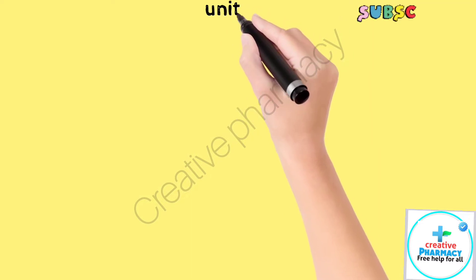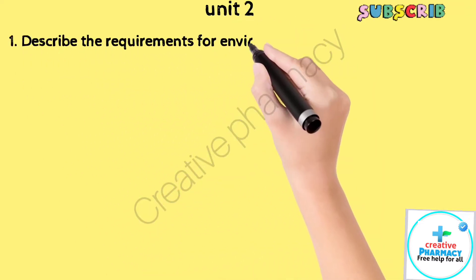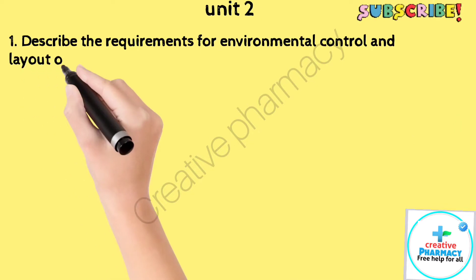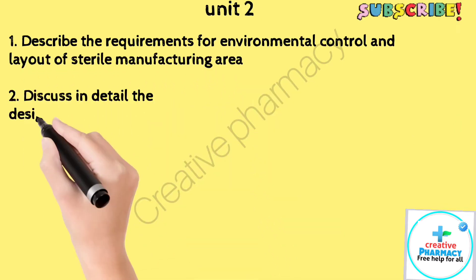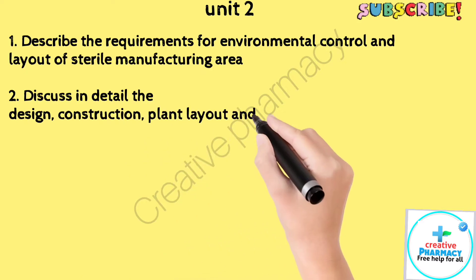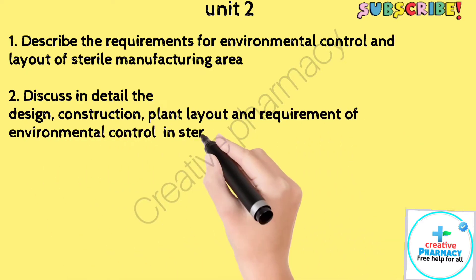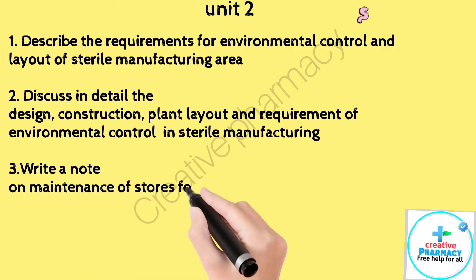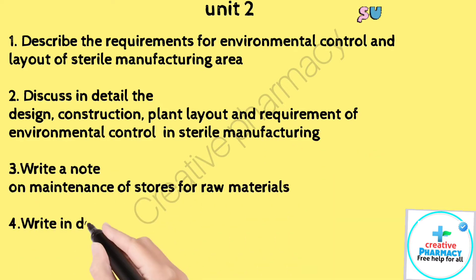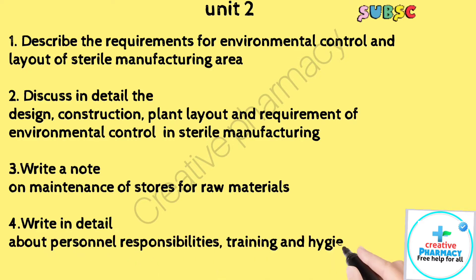Unit 2. Question 1: Describe the requirements for environmental control and layout of sterile manufacturing area. Question 2: Discuss in detail the design, construction, plant layout and requirement of environmental control for sterile manufacturing. Question 3: Write a note on maintenance of stores for raw materials. Question 4: Write in detail about personnel responsibilities, training and hygiene in pharmaceutical industry — Schedule M.